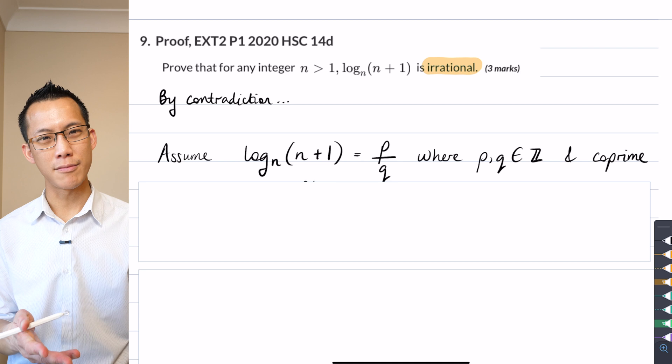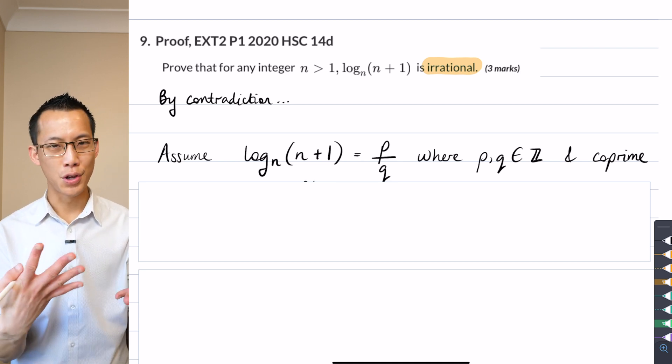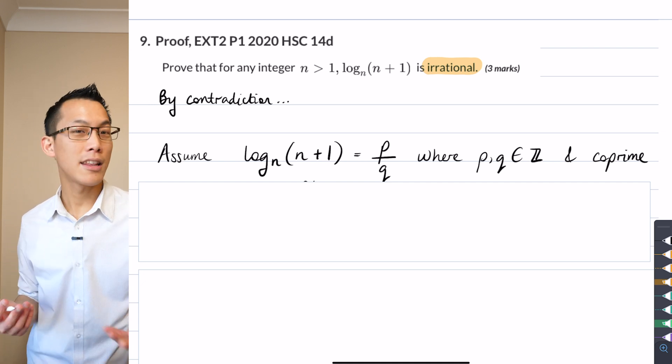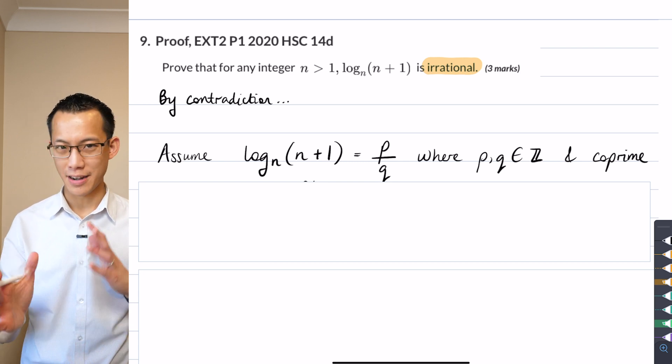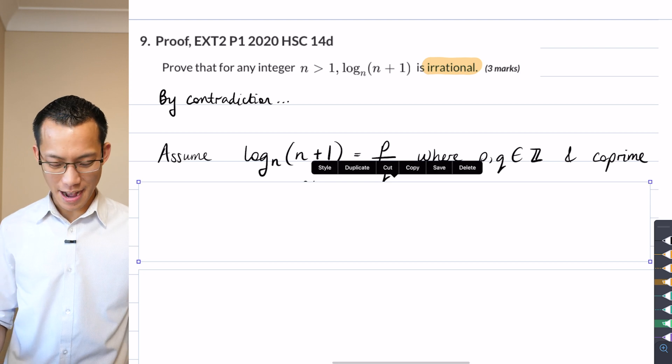We're going to assume the negation, and you have to be quite careful about how you state this, right? So I'm going to assume that I can say this log term here as P over Q, classic kind of choice of pronumerals here. P and Q have to be integers. And this is important too, if you've never, hopefully you've seen this word. I know I've talked about a couple of times here and there in some of my videos, coprime means it doesn't share any, the P and Q don't share any common factors, right?